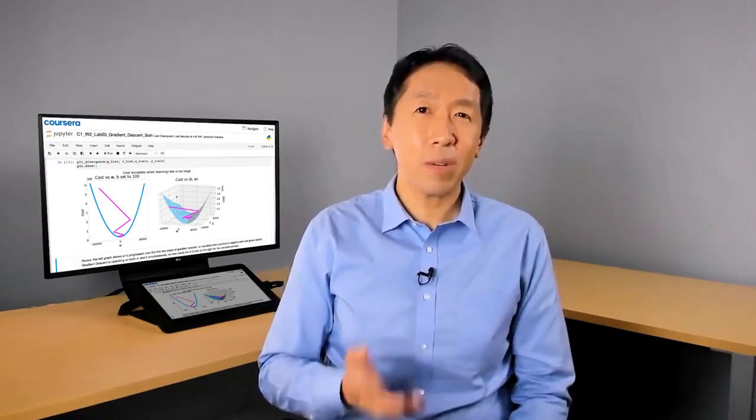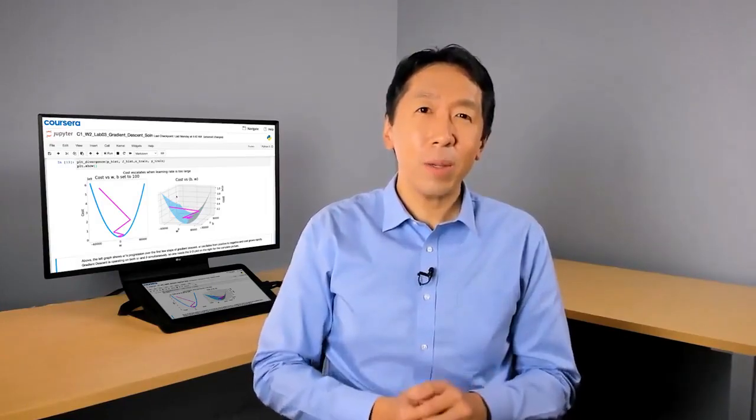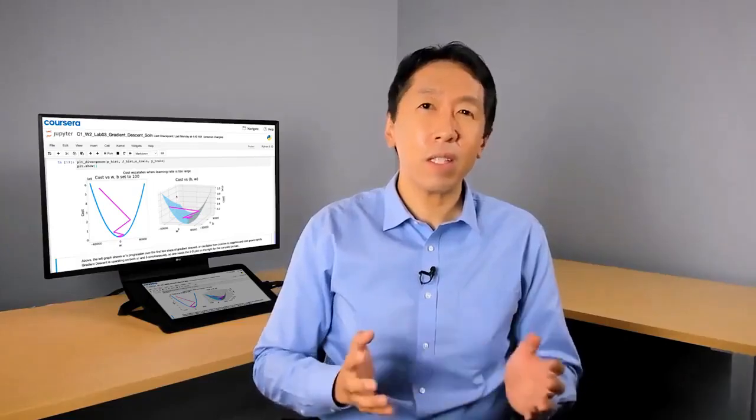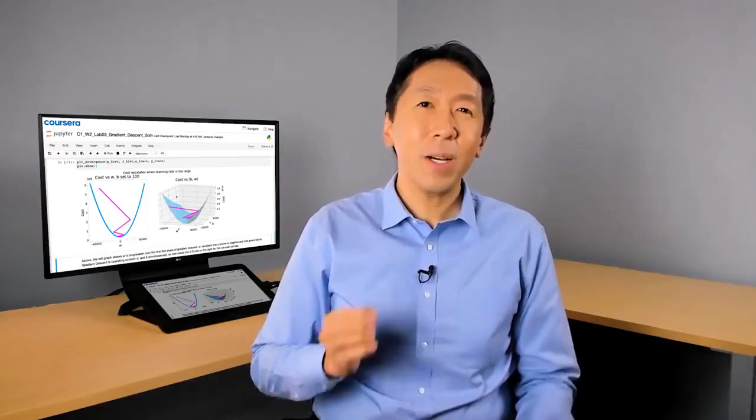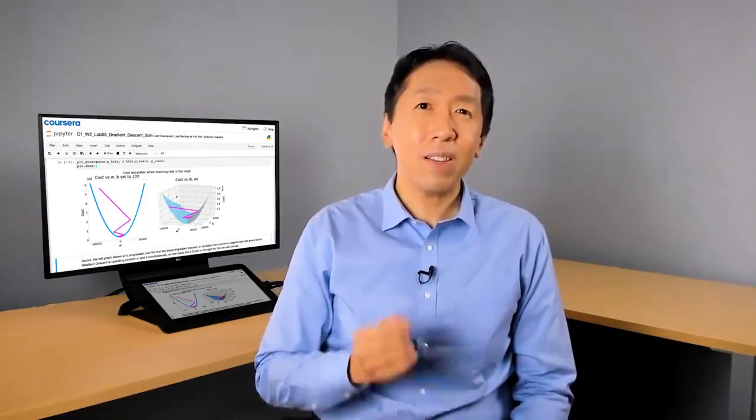You now know how to implement linear regression with one variable and that brings us to the close of this week. Next week, we'll learn to make linear regression much more powerful. Instead of one feature like size of a house, you'll learn how to get it to work with lots of features. You'll also learn how to get it to fit non-linear curves. These improvements will make the algorithm much more useful and valuable.